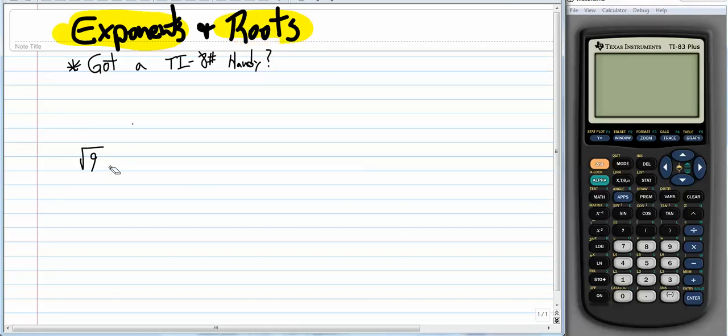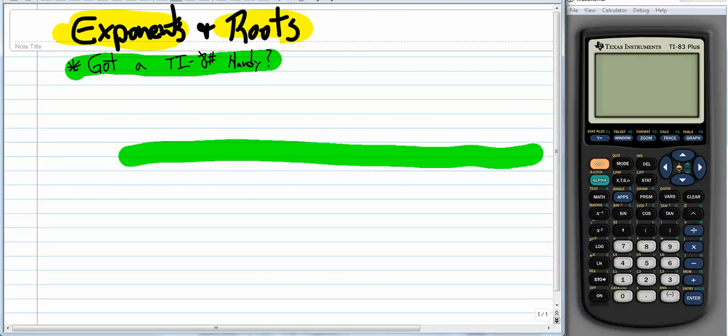You might have access to a TI-83 or 80-something. You can use that on the ACT, so it's a good idea to be familiar with how this calculator works. I went out and downloaded this one for free, so it's on my computer. You can get them for Android too on your phone or whatever.